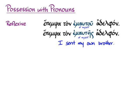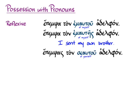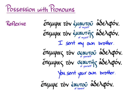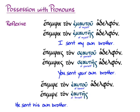In English we can't bring out the gender of the subject, but it could be important in context. Epempsas ton sautou adelphon switches us into the second person reflexive pronoun: the masculine form sautou implies that 'you' are masculine, or epempsas ton sautes adelphon uses the feminine — but in either case, 'you sent your own brother.' In the third person, the masculine form means 'he sent his own brother,' and the feminine form means 'she sent her own brother.'